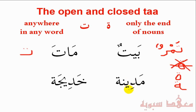The words here are medīnah and khadījah. Notice that I didn't pronounce the tā' — I actually pronounced the tā' marbūṭa as a hā': medīnah, khadījah. When you stop on the tā' marbūṭa, it is actually pronounced as a hā' in both cases.